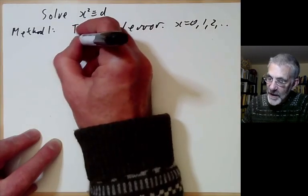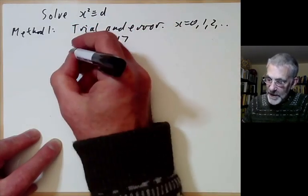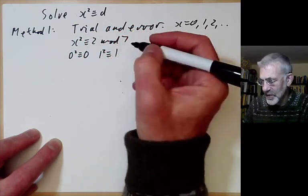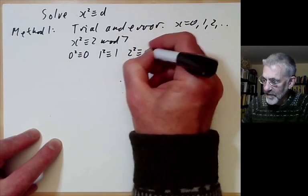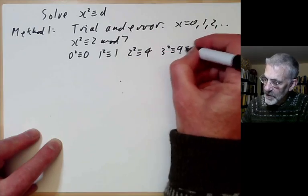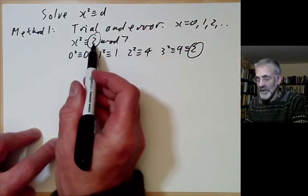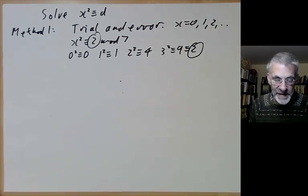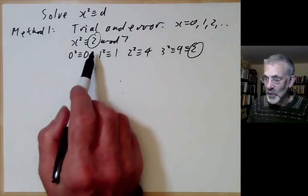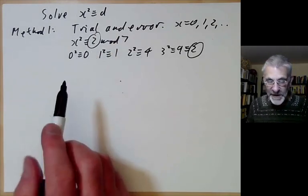For example, to solve x² ≡ 2 mod 7: 0² ≡ 0, no good; 1² ≡ 1, no good; 2² ≡ 4, no good; 3² ≡ 9 ≡ 2 — great, we've found a square root of 2. This method is obviously fine if our prime is very small, but utterly useless if our prime is large because it would just take too long.